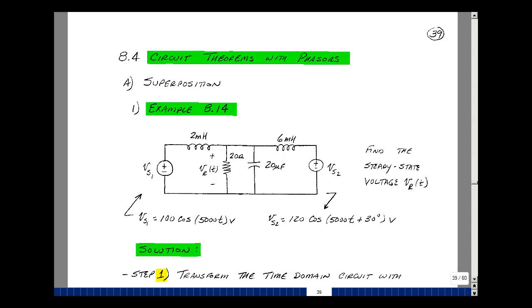Given this example with two voltage sources, where the amplitudes are different and the phase angles are different but the frequency is the same, can you solve for the voltage V sub r of t in steady state?